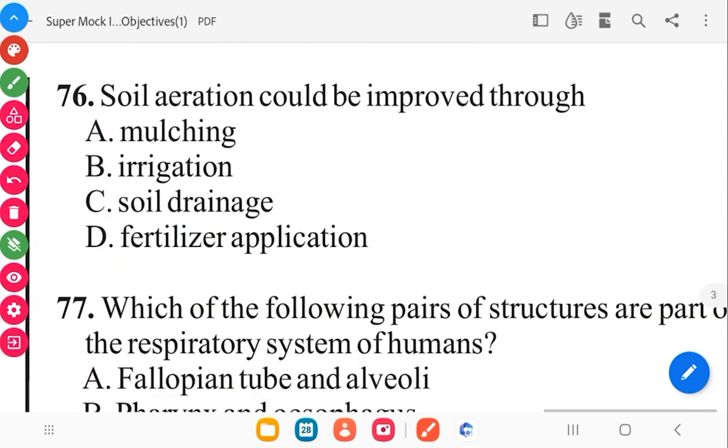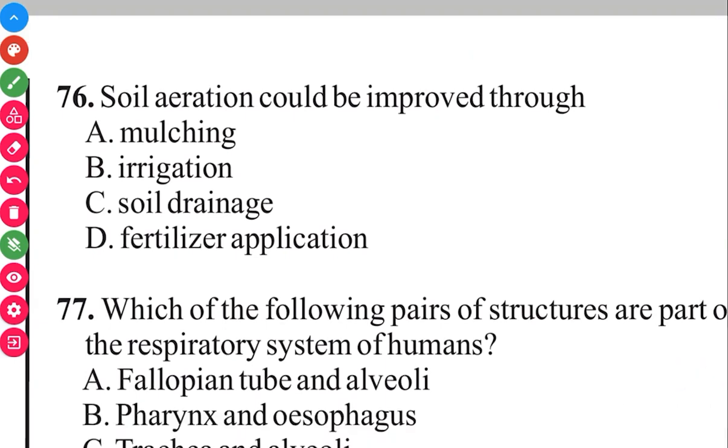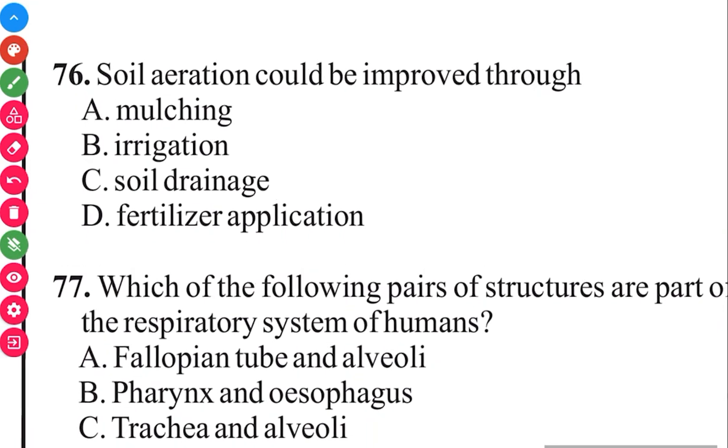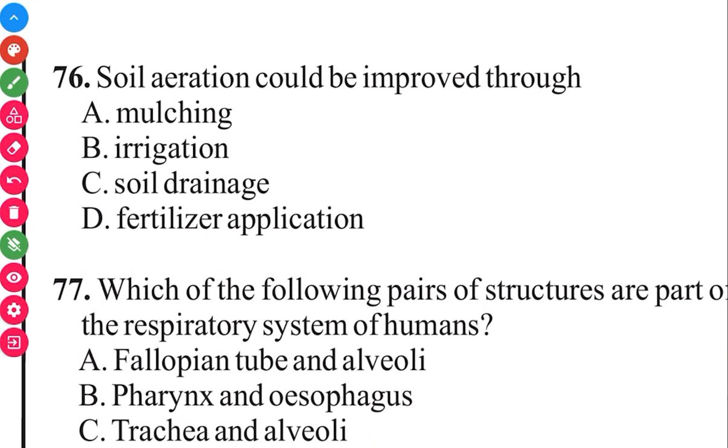Question 76. Soil aeration can be improved through soil drainage. In 3, 2, 1, soil aeration can be improved and the soil drainage is also improved.